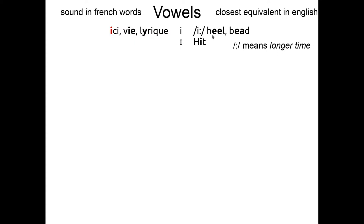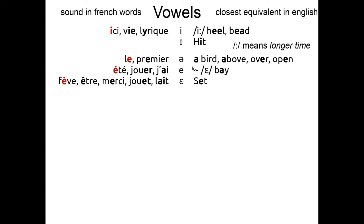So, in English the I sound is always long. Then we have the letter E. In French, that's the letter E. It can of course be pronounced E, like in le or premier. In English you have a bird, above, over, open.